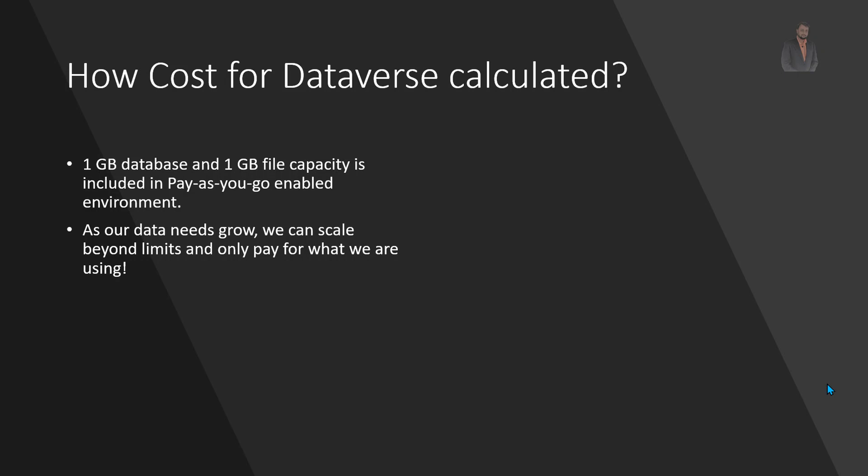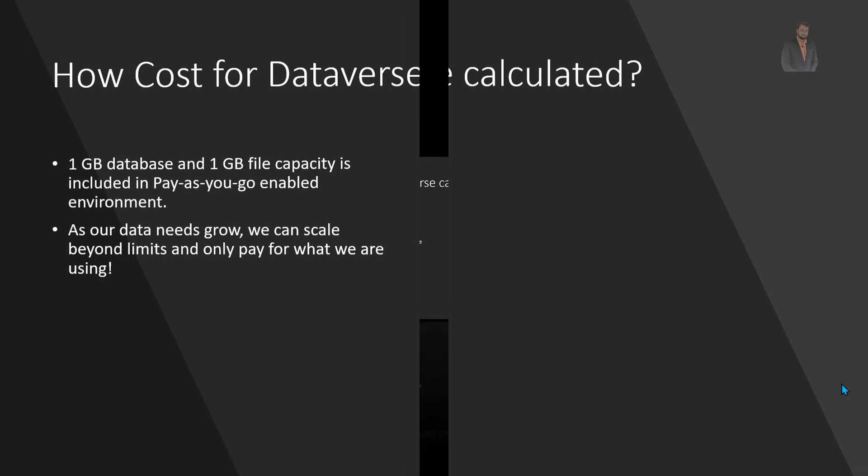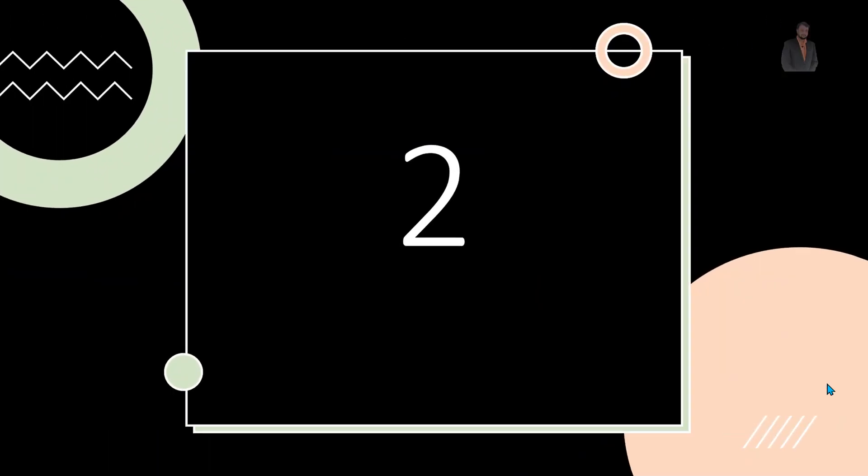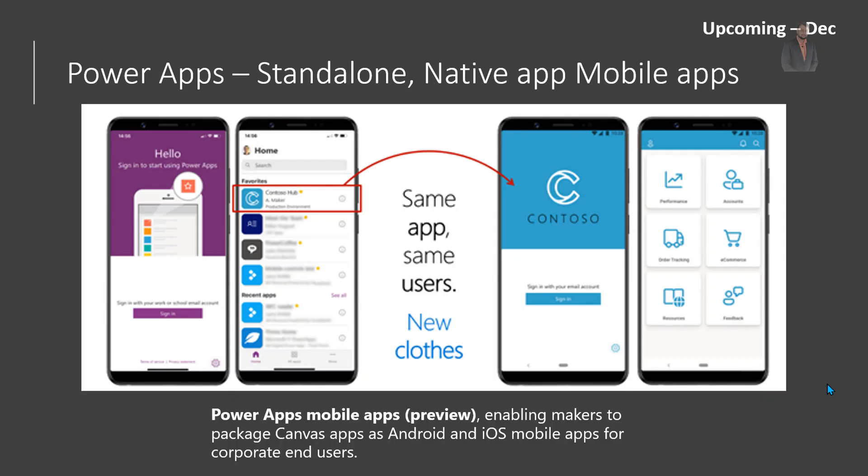This is the first look at the new licensing strategy introduced at Ignite. It is currently in preview and you can try it out yourself. Let's move towards the second announcement, which is around standalone and native mobile apps for Power Apps.